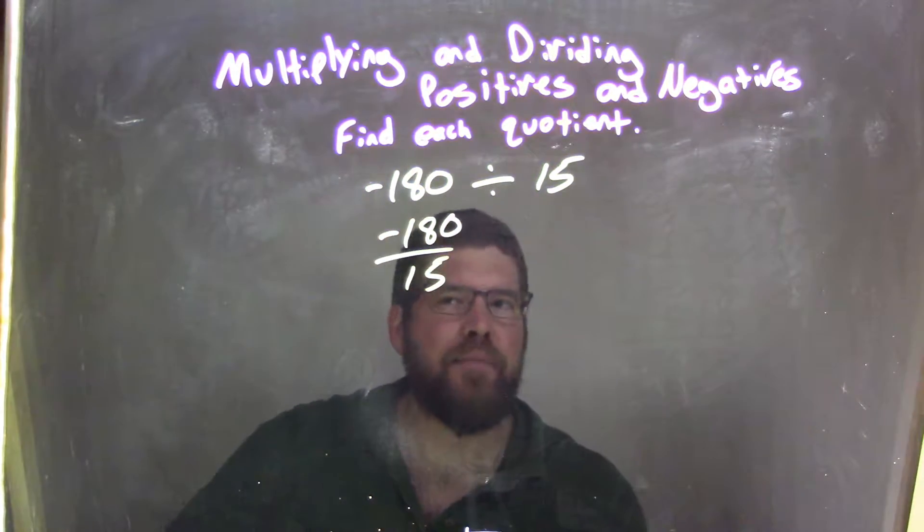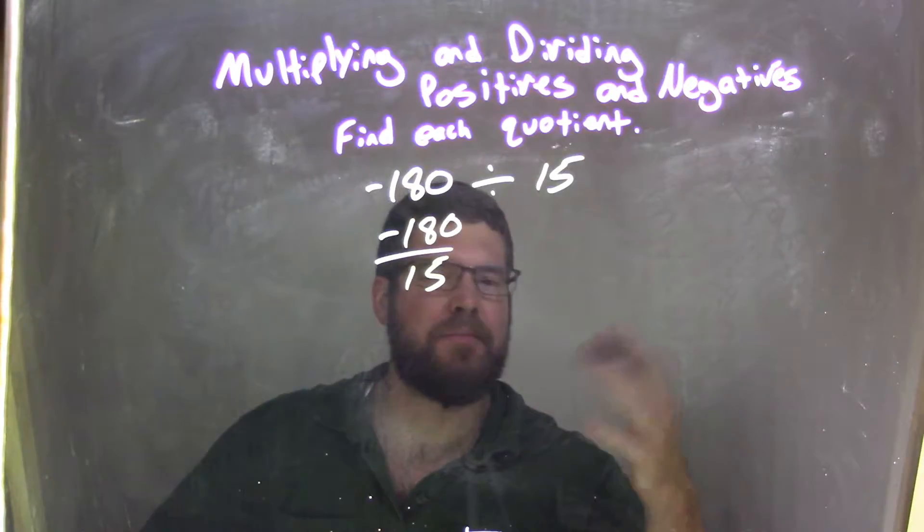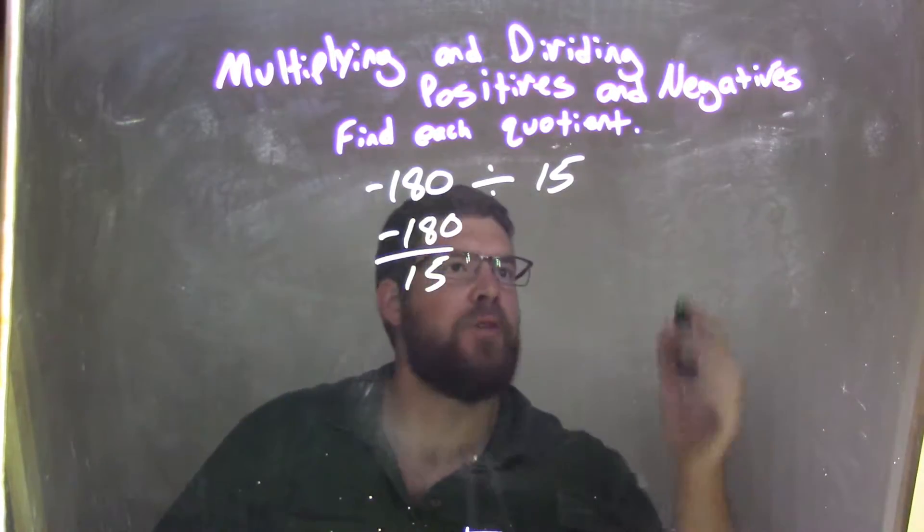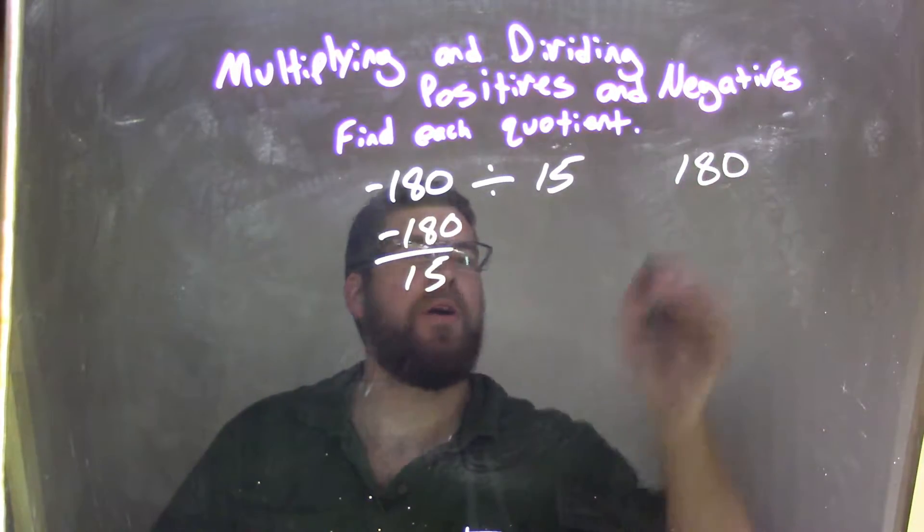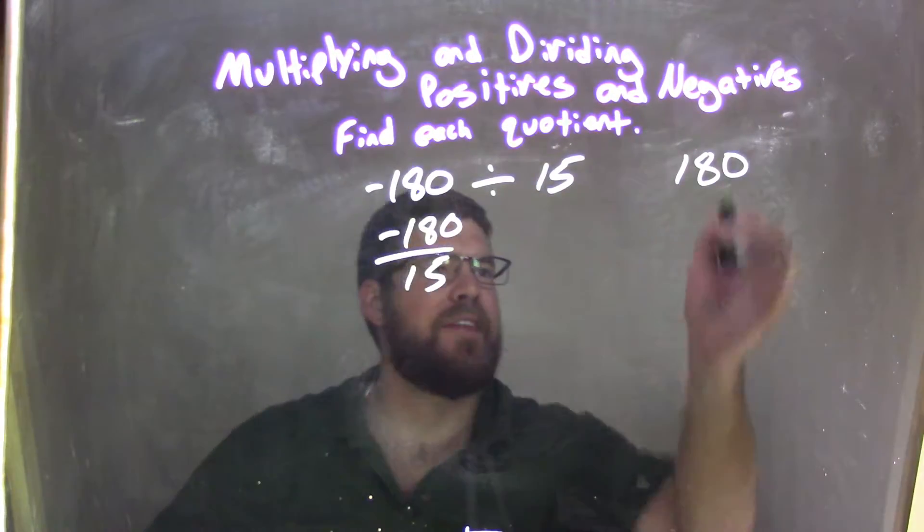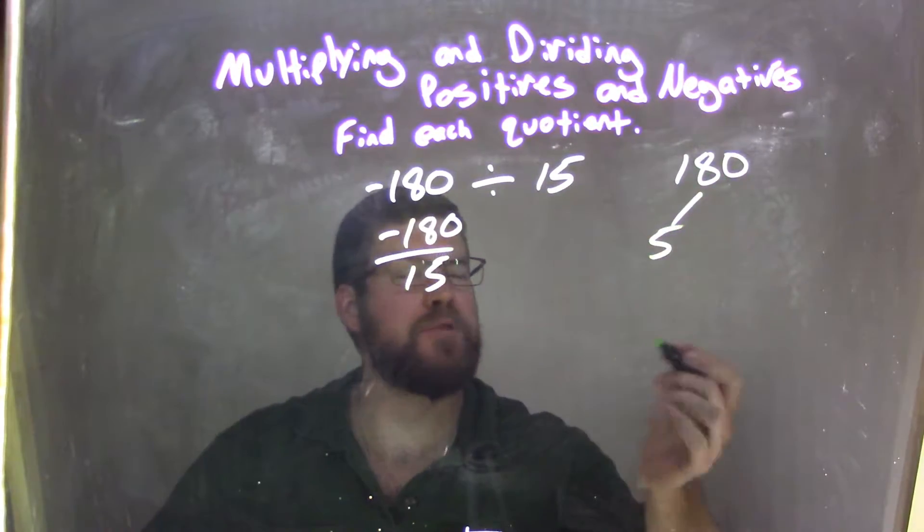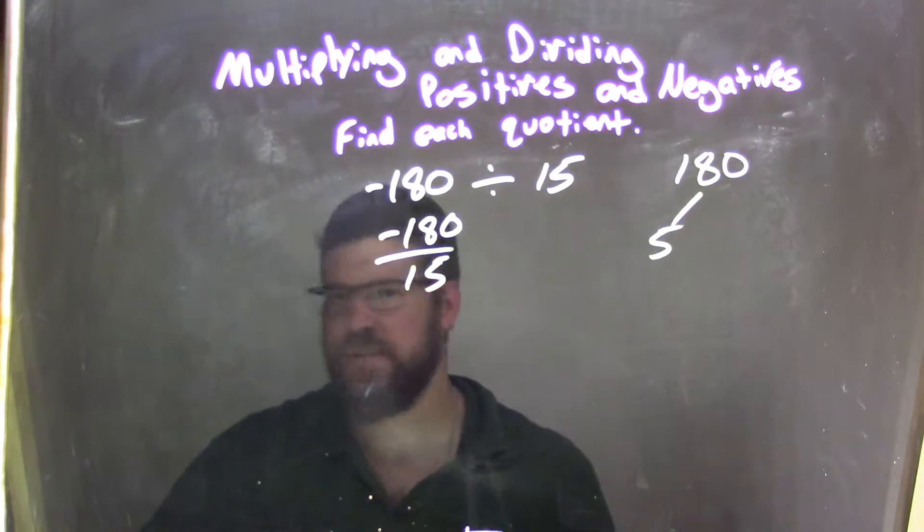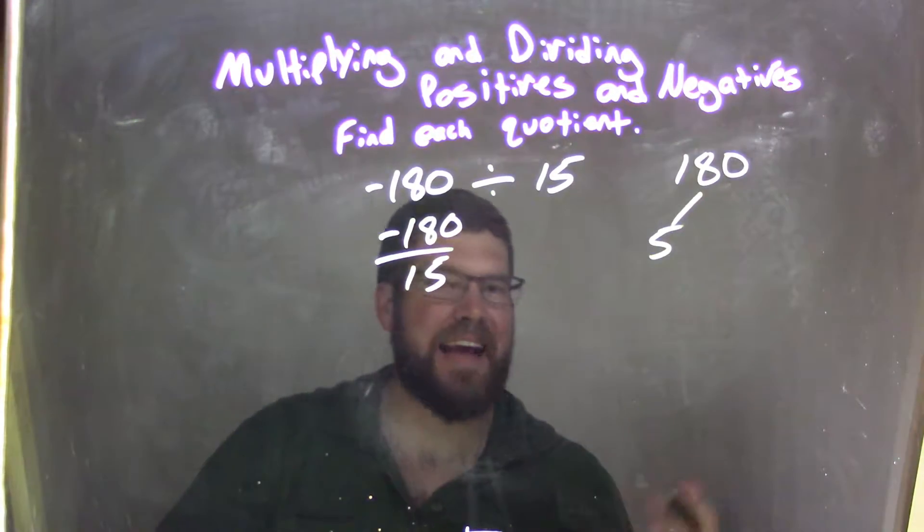Well, negative 180, can I break this down into some factorization here? I can always do it by 2, but I think 5 goes into it, right, because it ends in a 0. So I know 5, and the reason why I'm choosing 5 is I know 15 divides by 5, and I can probably get something cancelled out here.